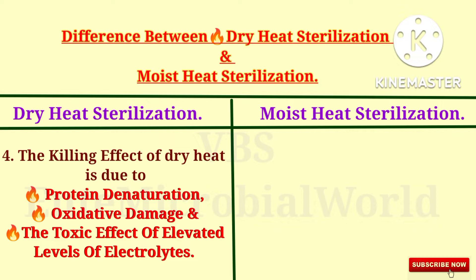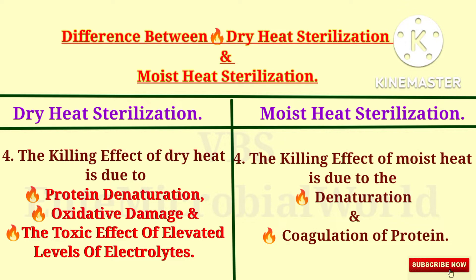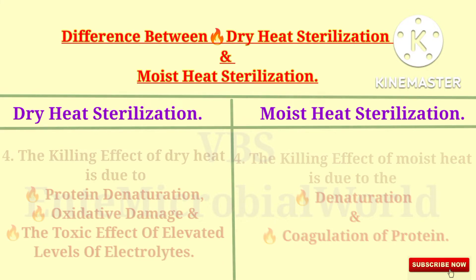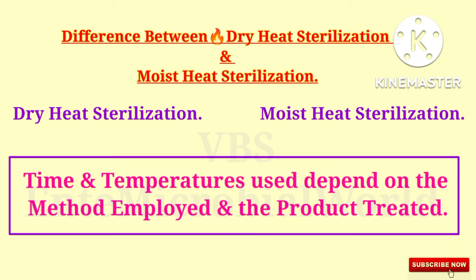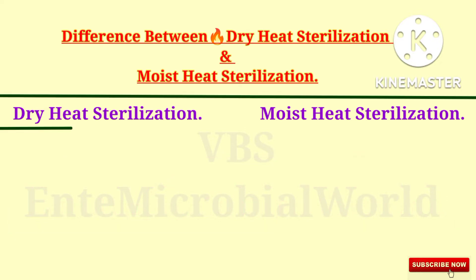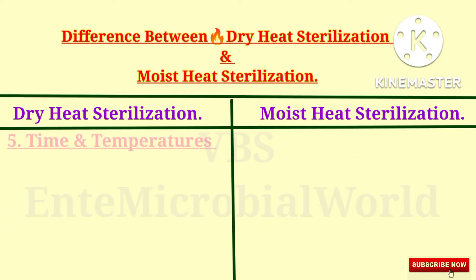The killing effect of dry heat is due to protein denaturation, oxidative damage, and the toxic effect of elevated levels of electrolytes. The killing effect of moist heat is due to the denaturation and coagulation of protein. Time and temperatures used depend on the method employed and the product treated.